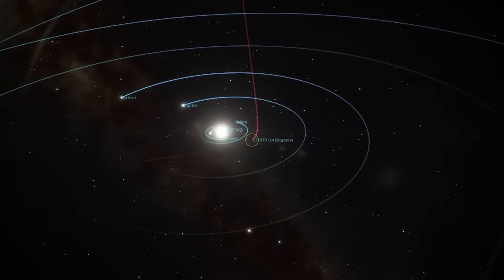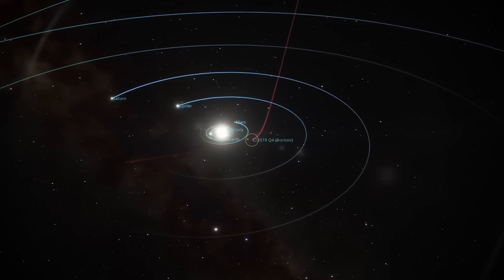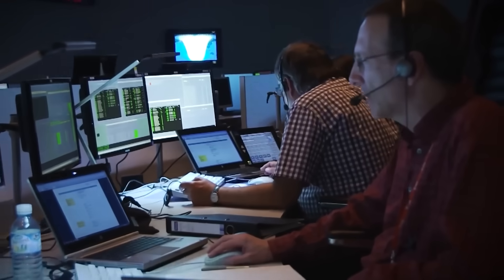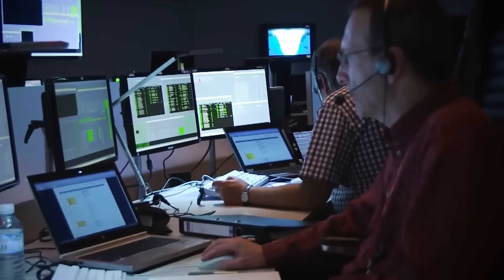And because it will soon pass behind the sun, we'll have a gap in data, just as its orbit could begin to shift. That blind spot, that silence, could be the most dangerous part of all.